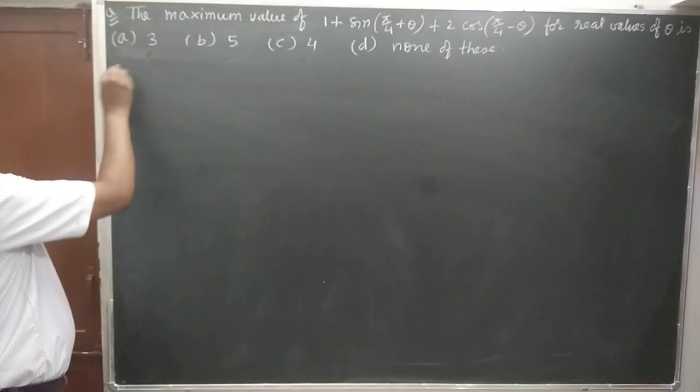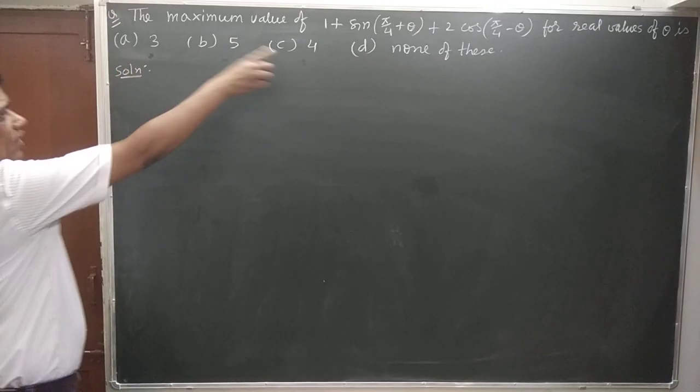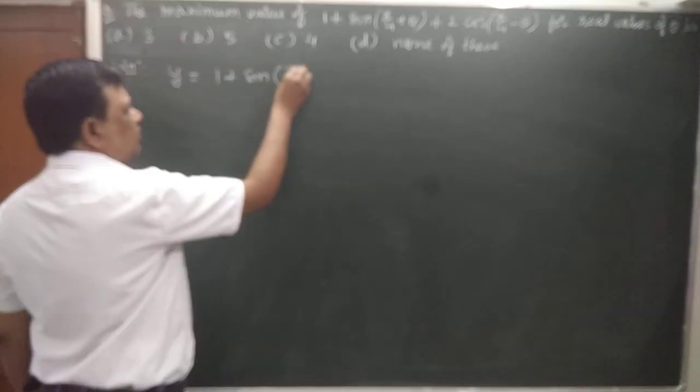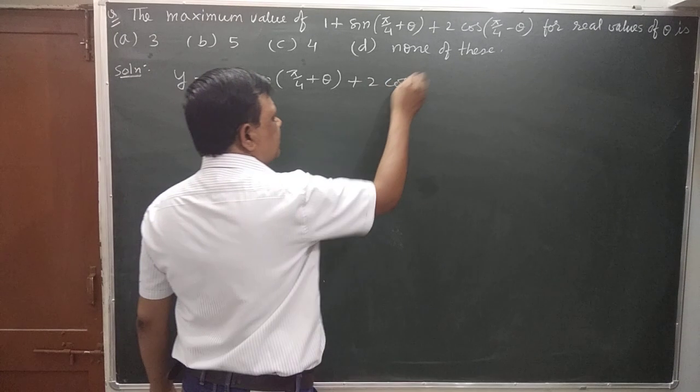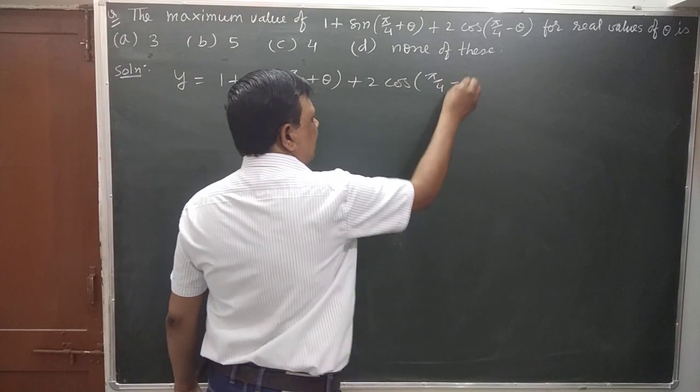y = 1 plus sin(π/4 + θ) plus 2 cos(π/4 - θ). Now we'll solve this.